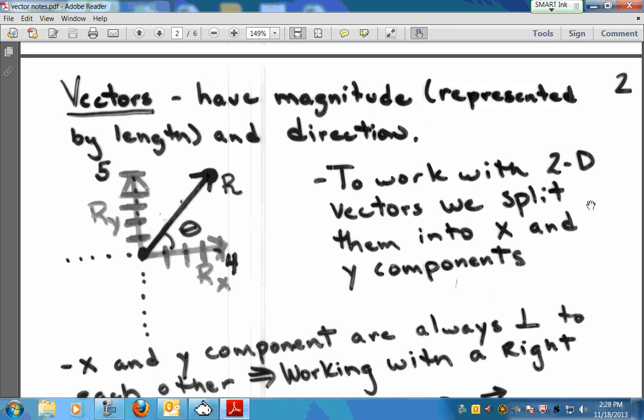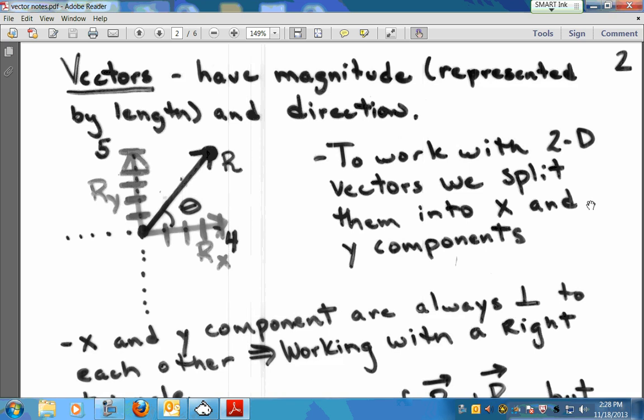So vectors. Remember what makes a vector a vector is a vector has magnitude. That's its size. That's its number amount. And when you draw it out, it's represented by the length. Although if you're going to do it mathematically, you can just write its number next to it, and not have to worry so much about getting the length perfect. But you ought to make bigger vectors longer and smaller vectors shorter. They also have direction. So vectors have magnitude and they have direction. To work with two-dimensional vectors, we're going to end up splitting them into what's called x and y components.